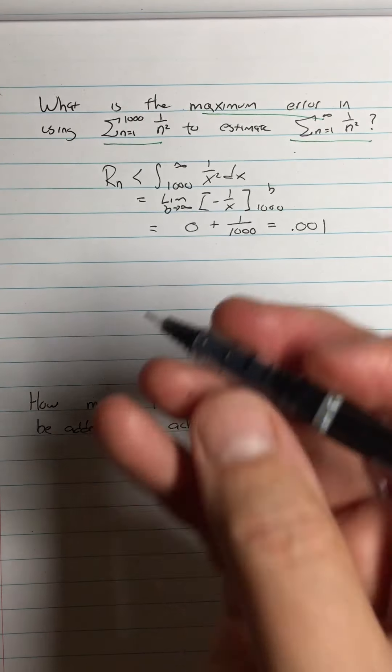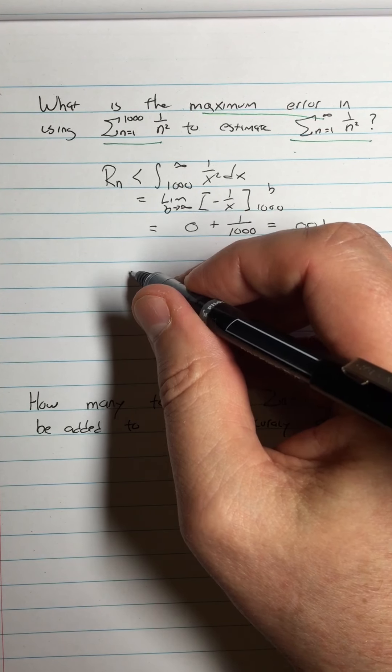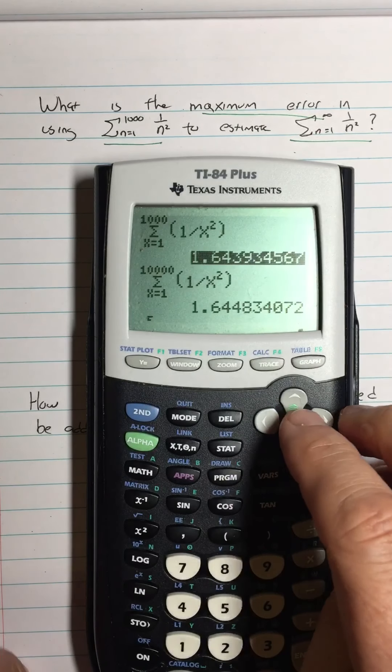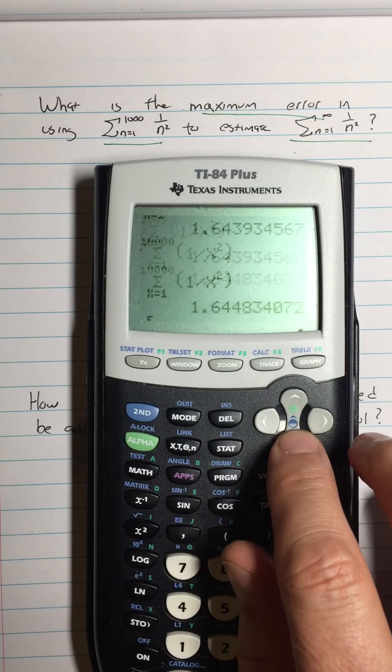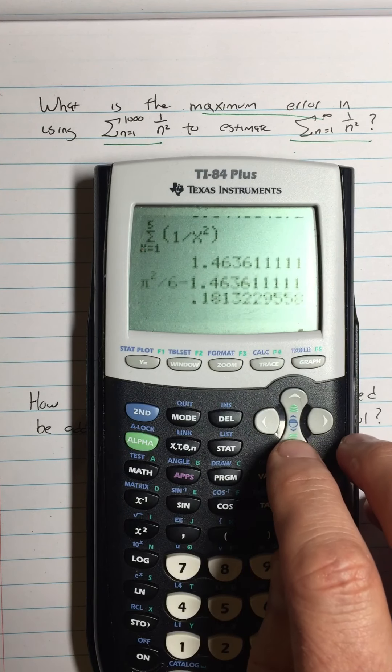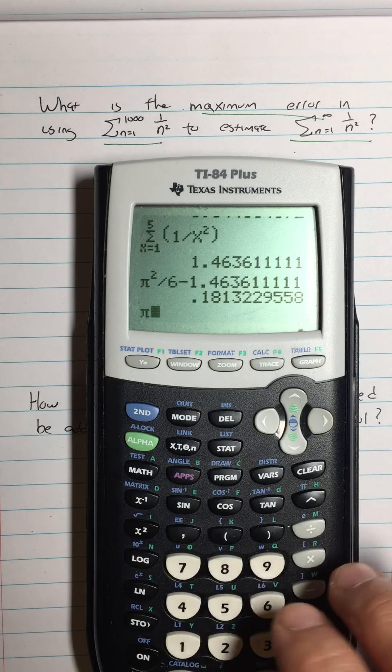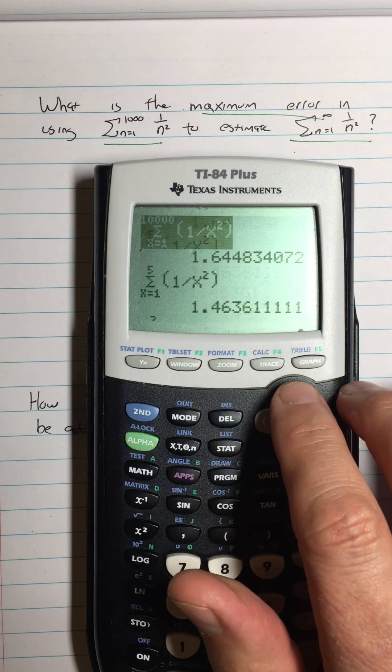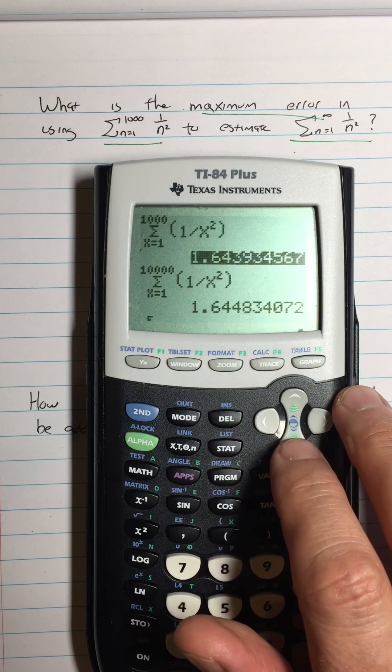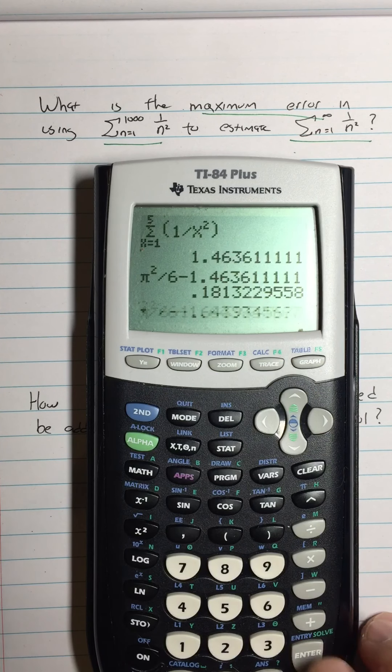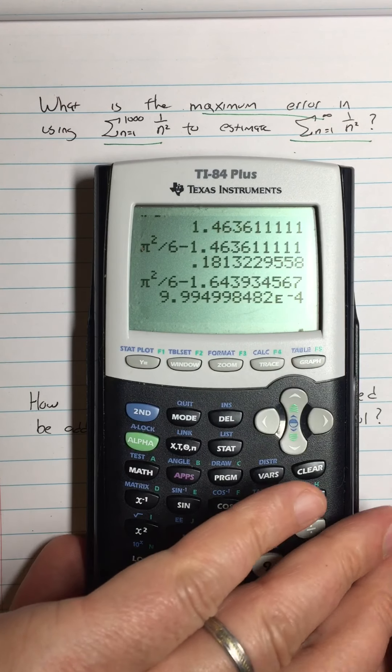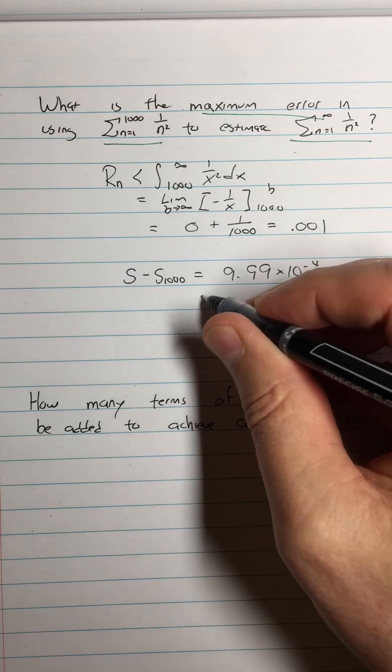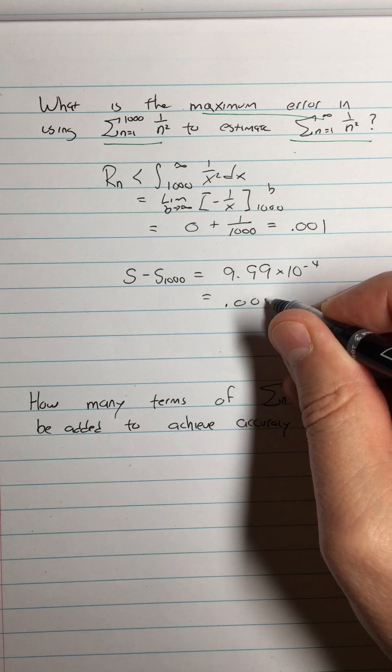So now let's look at that. Let's look at what our - the true sum minus S sub 1,000 is. So if we do that, just sort of checking on our formula. So if I go pi squared over 6 minus our value from up here, where we estimated with 1,000 terms, and we got 9.99 times 10 to the negative 4th.